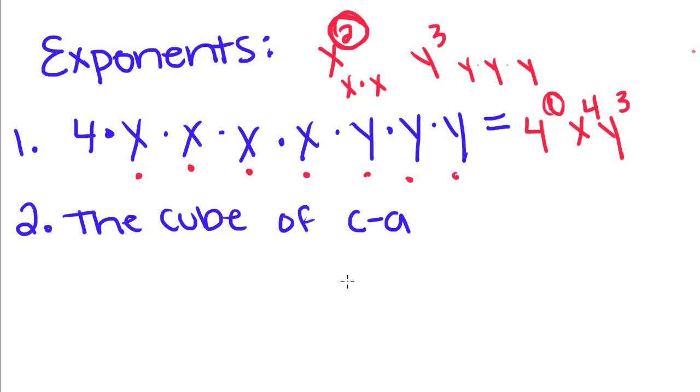So if it's written like this and it asks for the cube of c minus a, here are some things you'll have to just kind of memorize. Cube means to the 3rd power, square, which you already know, means to the 2nd power, and then anything after 3, you're just going to say to the 4th power, to the 5th power, or they're just going to write it out like this.